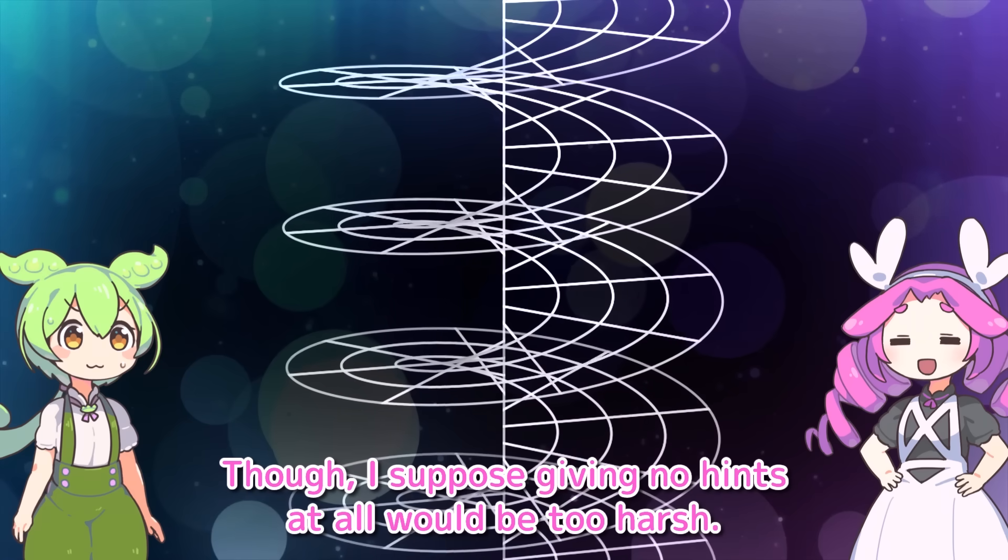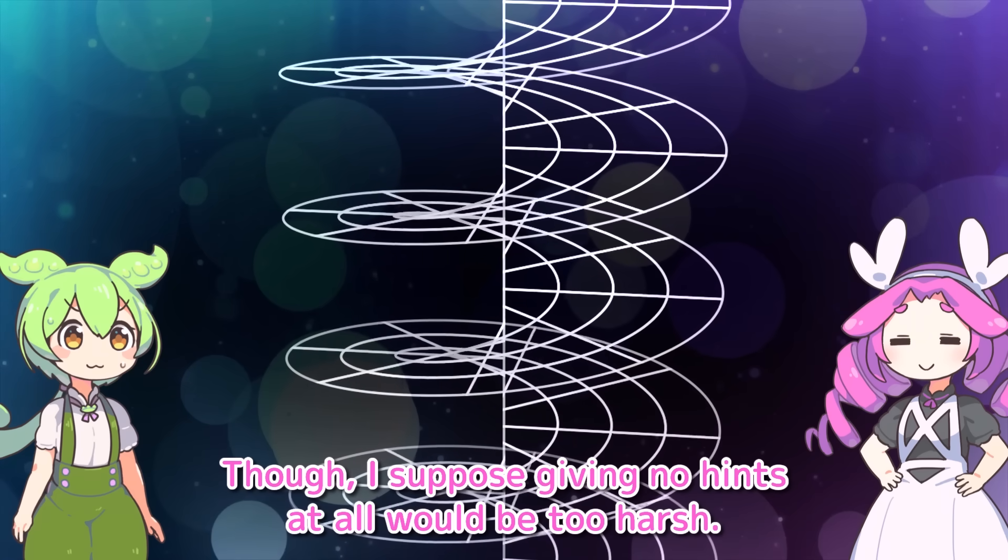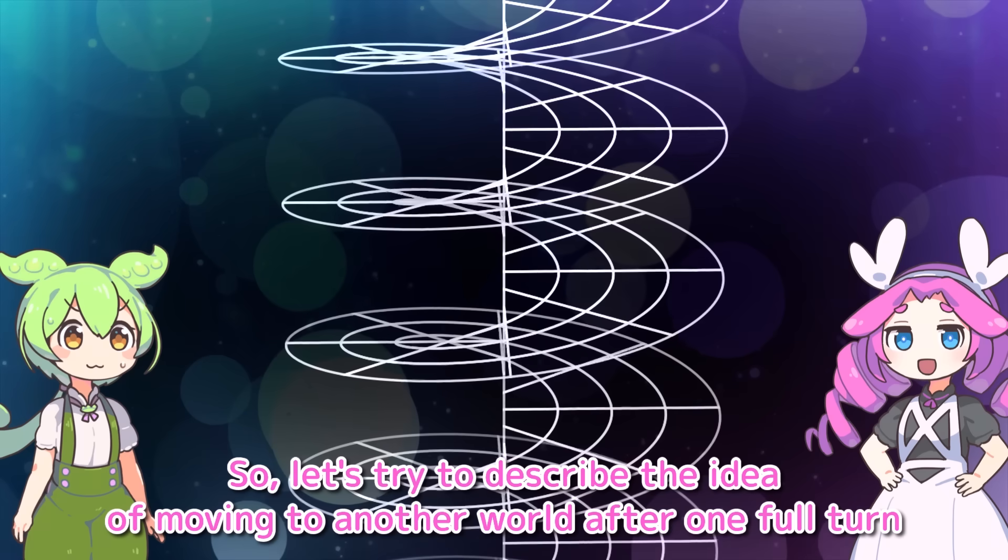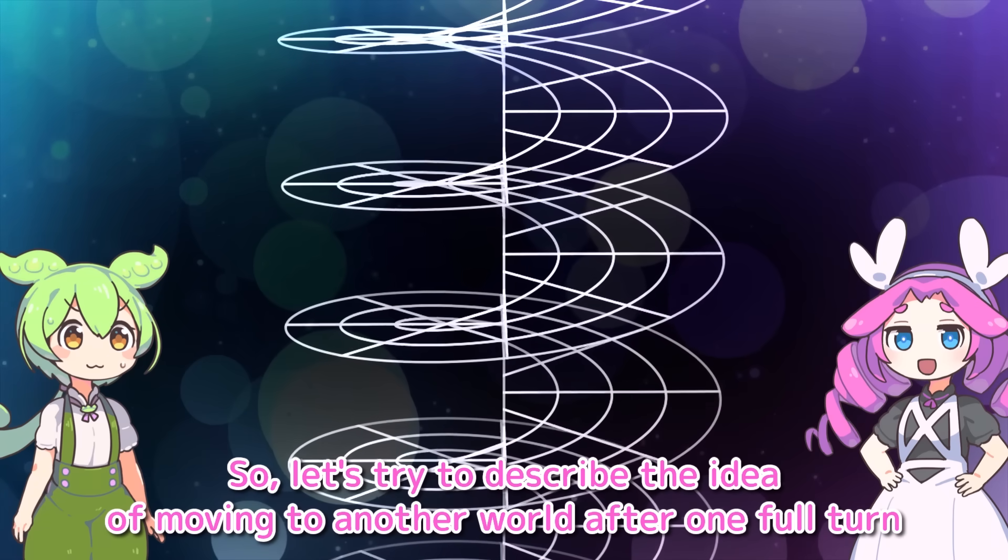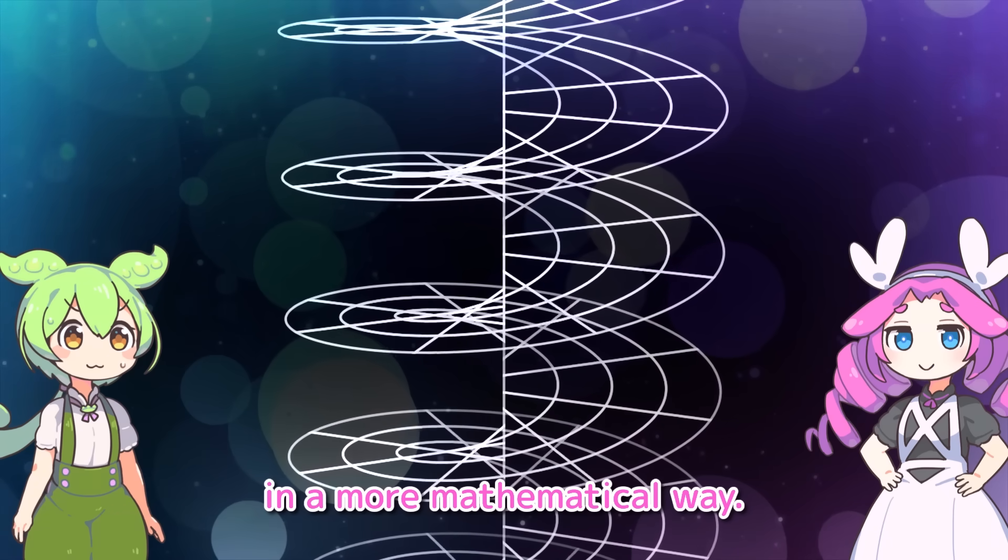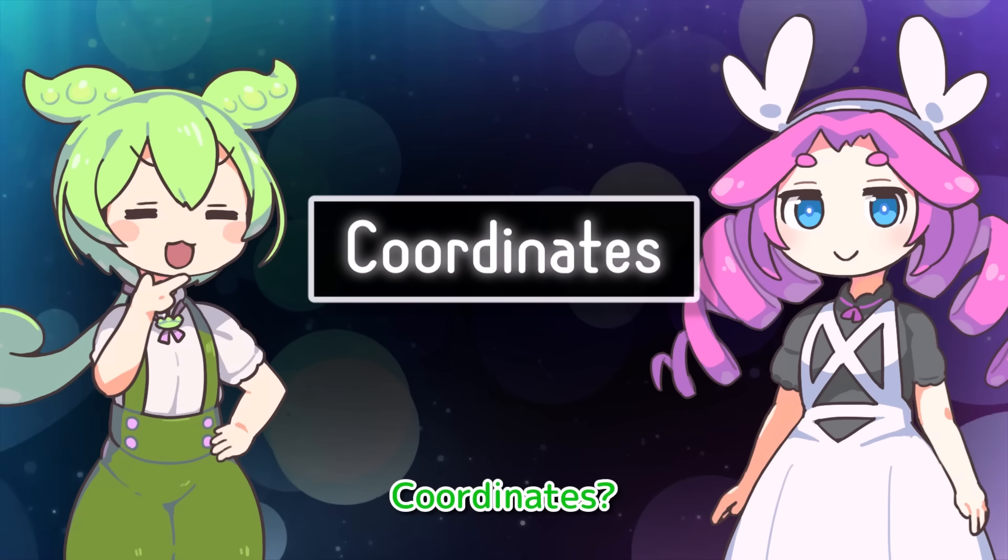Try to think for yourself a little. Though, I suppose giving no hints at all would be too harsh. This diagram is only meant to be intuitive. So let's try to describe the idea of moving to another world after one full turn in a more mathematical way. The key to this story is coordinates.